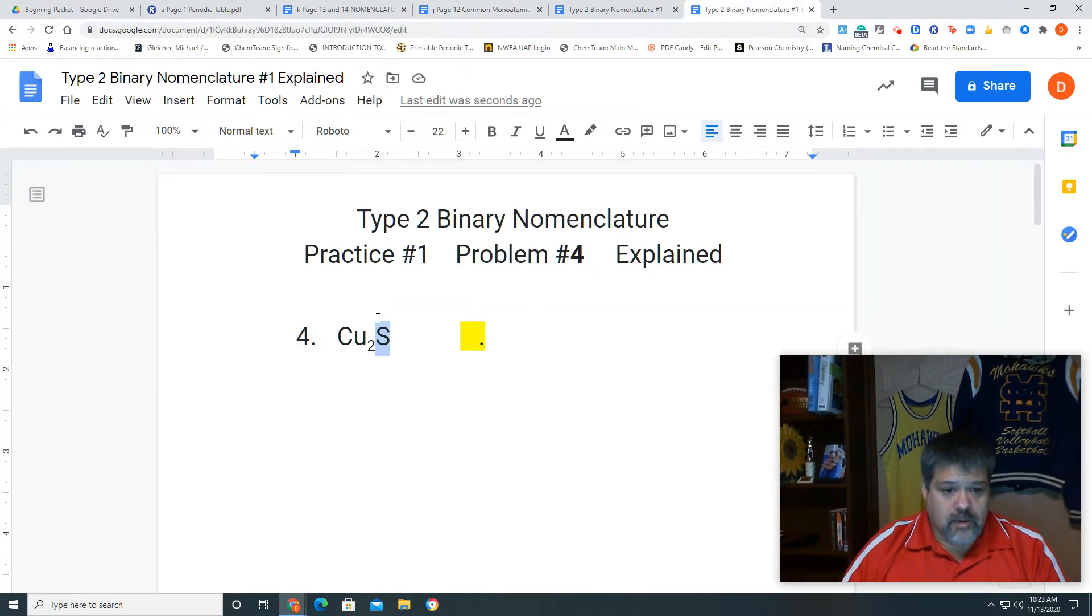So, we do know what the charge of sulfur is. That is going to be a negative 2. Now, how many sulfurs do we have? Well, there's no subscript, so that means the number of sulfurs that we have is 1, so our total charge for sulfur is a negative 2.